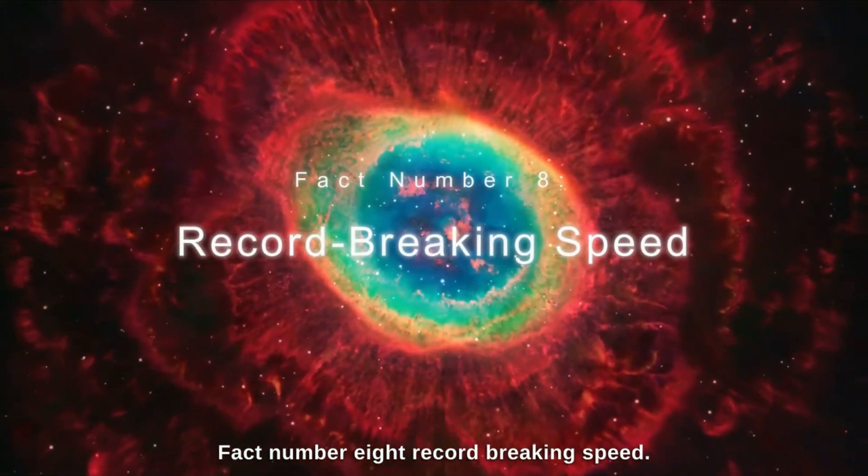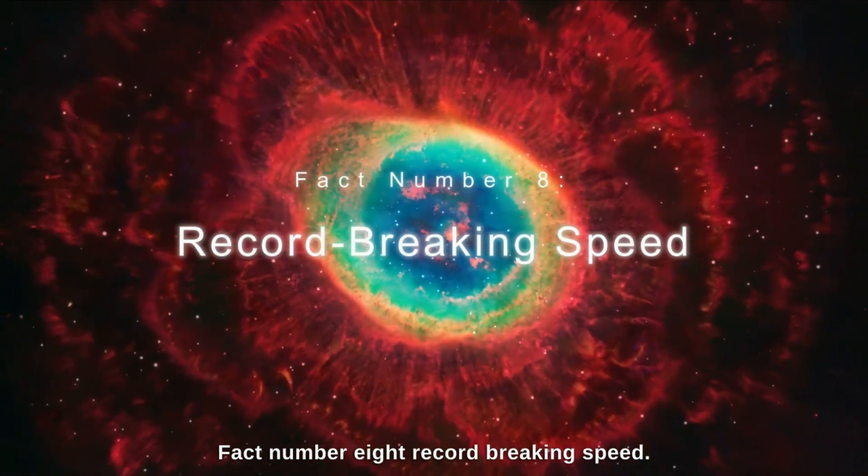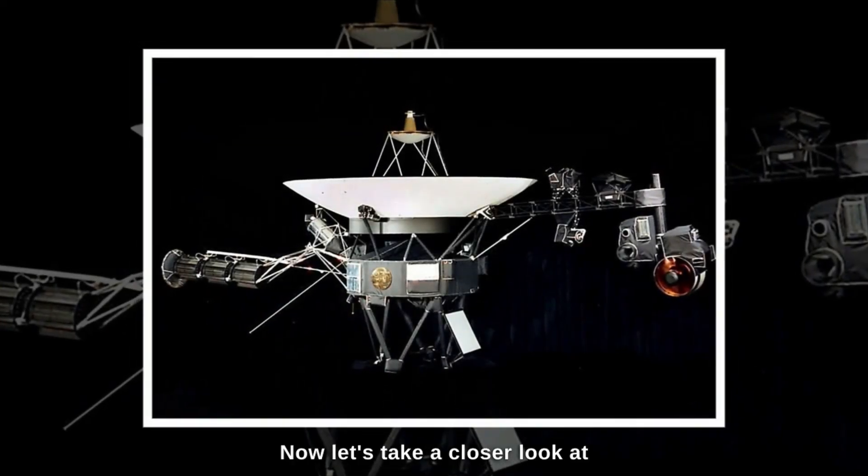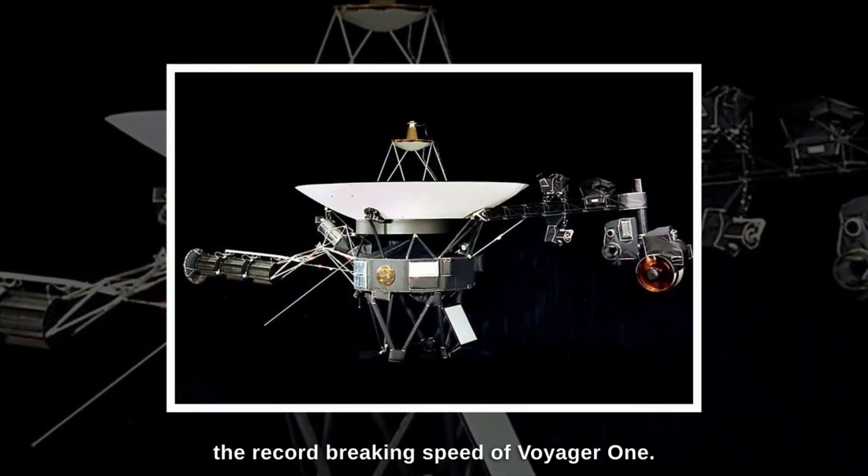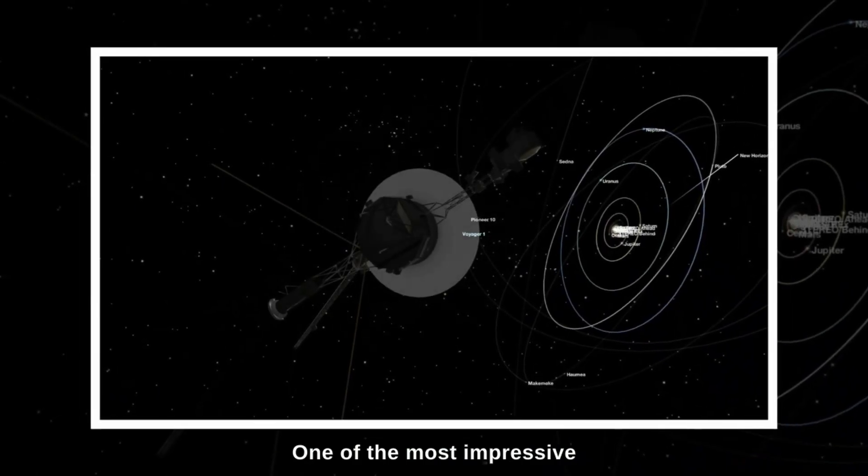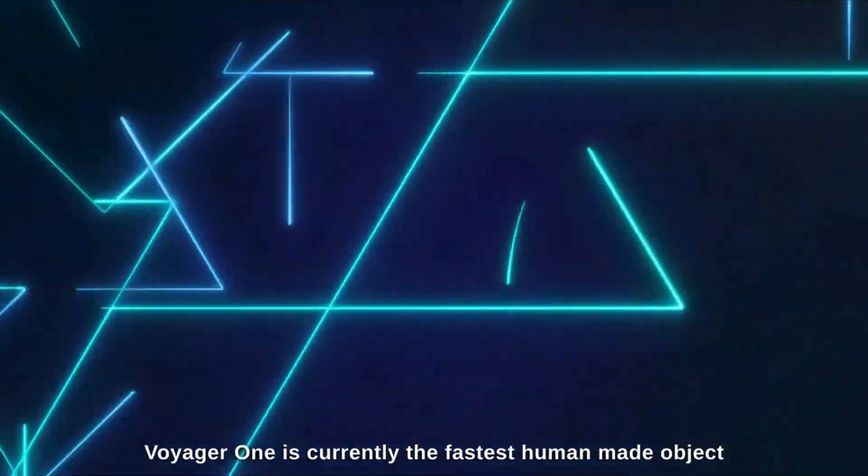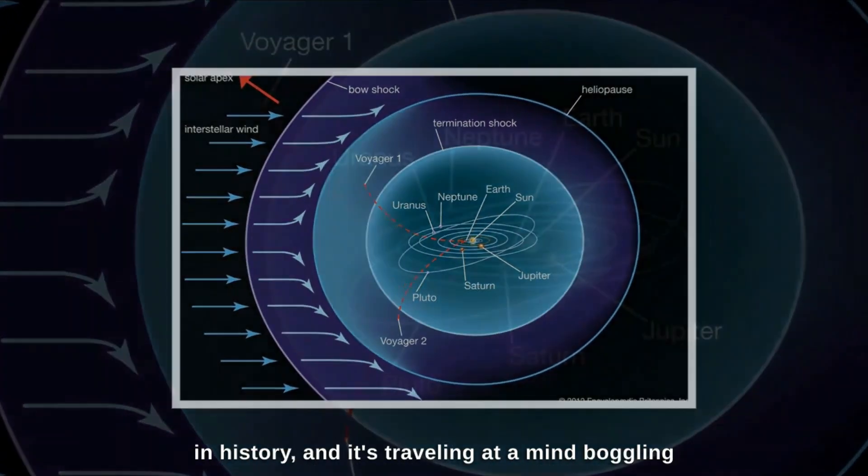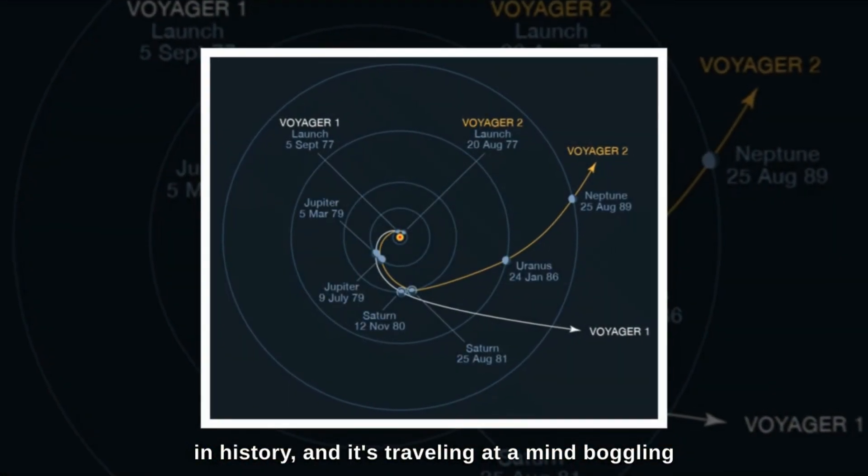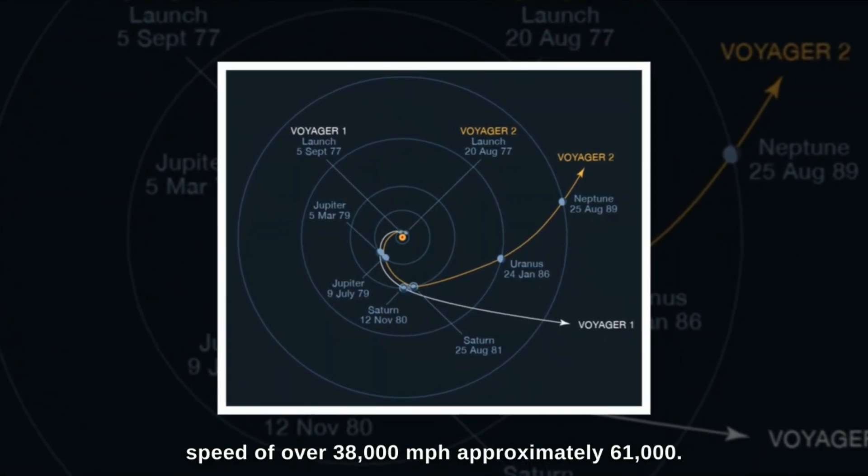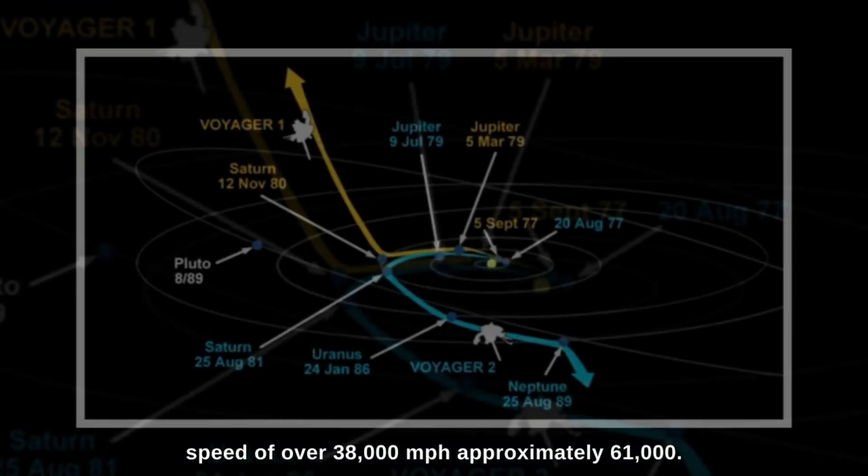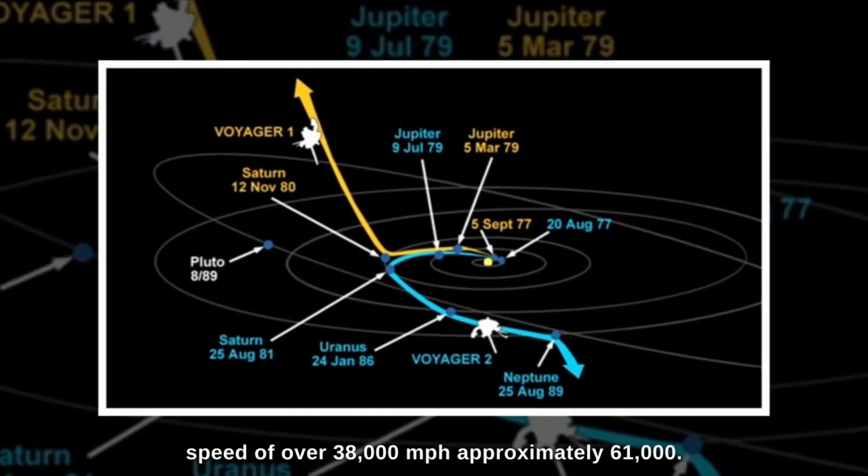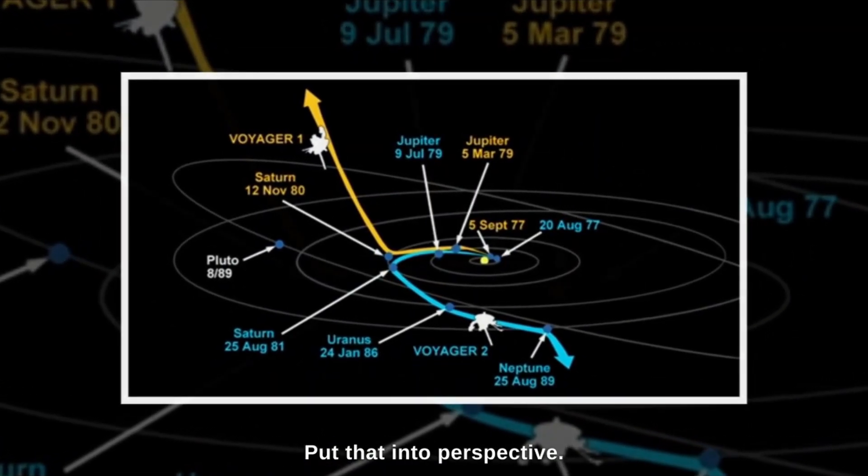Fact number 8. Record Breaking Speed. Now, let's take a closer look at the record-breaking speed of Voyager 1, one of the most impressive aspects of this remarkable spacecraft. Voyager 1 is currently the fastest human-made object in history, and it's traveling at a mind-boggling speed of over 38,000 miles per hour, approximately 61,000 kilometers per hour.